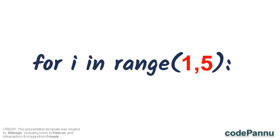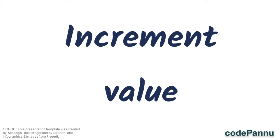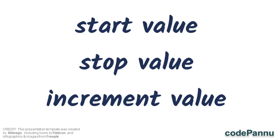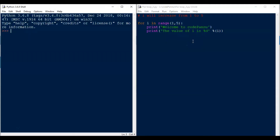How do we do that? In the for loop syntax, in the range section, we gave two values: the start value and the stop value. In the same section we can also give one more value — this is called the increment value. When we don't give a value, Python will increase from start to stop by 1 by default. If we want to increase by 2, we can give it as the third value. So now we have a start value, stop value, and an increment value.